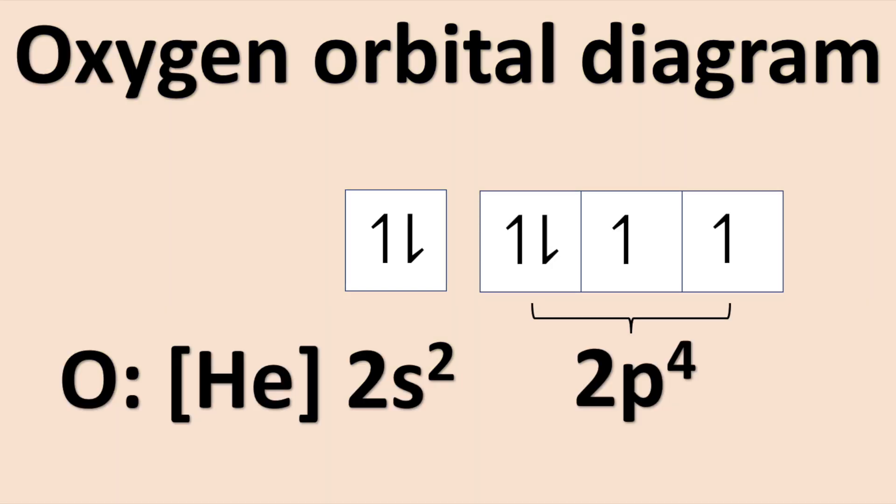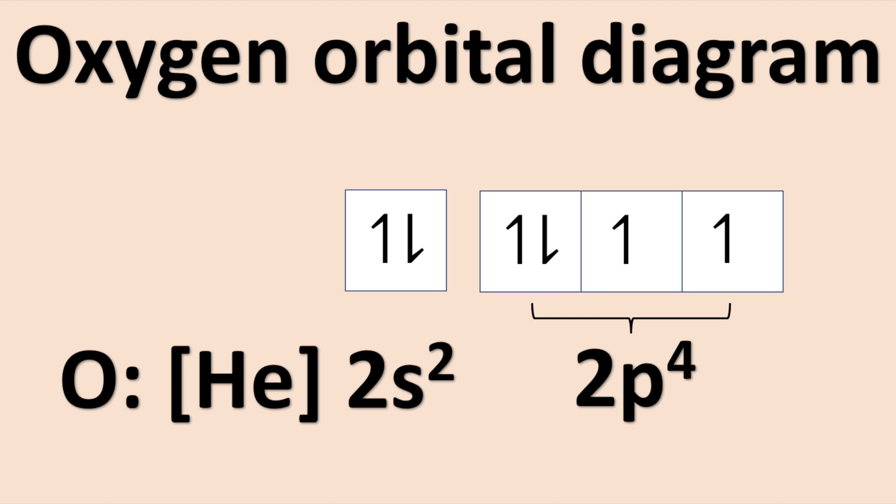In the case of oxygen, it has a dip in ionization energy as well. This can be explained by looking at the electron configuration, which is helium 2s2 2p4. If we were to remove an electron from the p orbital, it would actually reduce the electron-electron repulsion, because it would become a half-filled p orbital. The electron configuration would become helium 2s2 2p3, making it an oxygen cation.